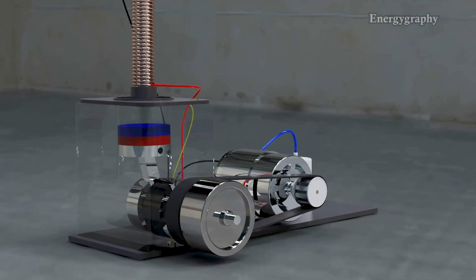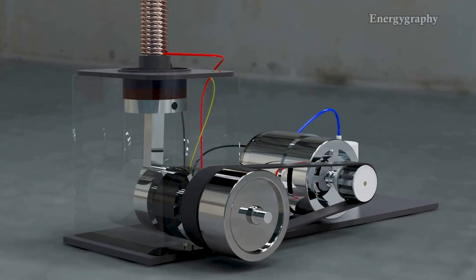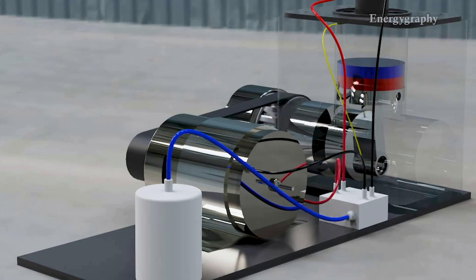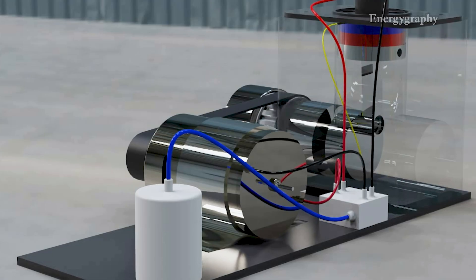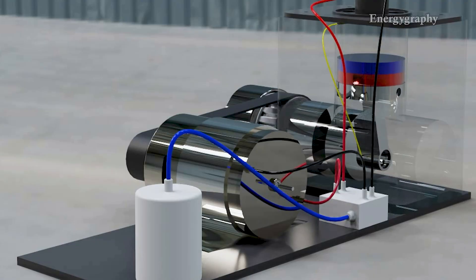When it is completed, I will make a video and fully explain all the construction systems. When the engine is turned on, power is transferred to the generator through the belt and pulleys, and the generator starts to generate electricity and charge the capacitor, and a cycle is created, a continuous cycle.